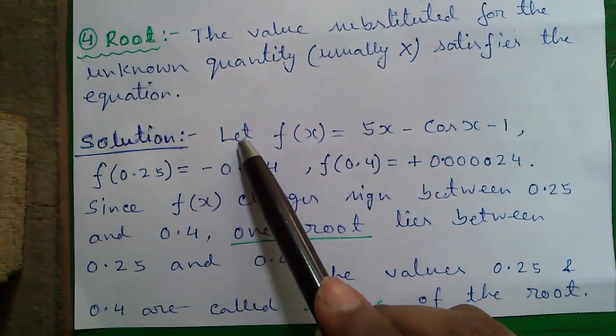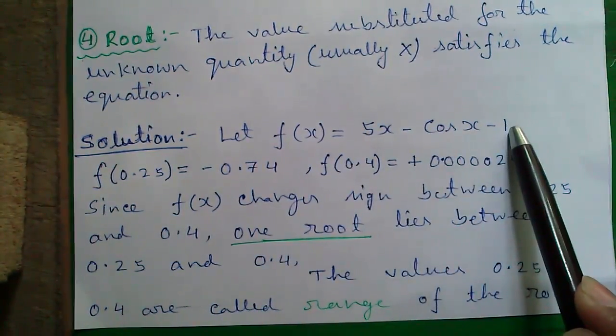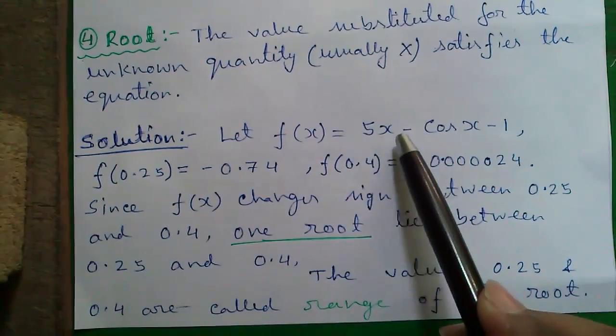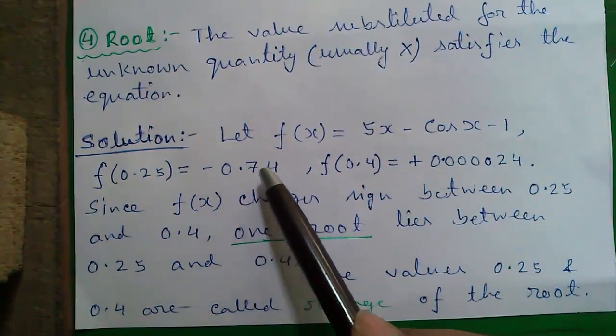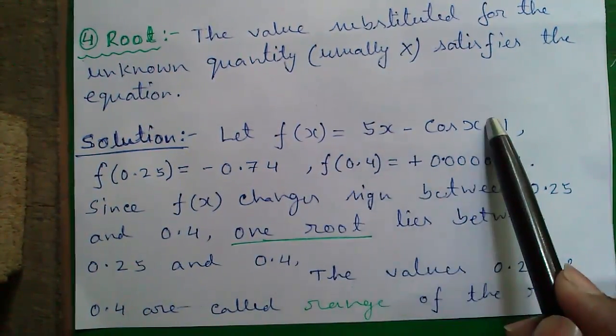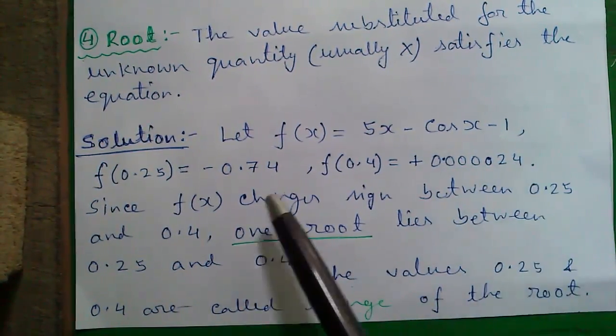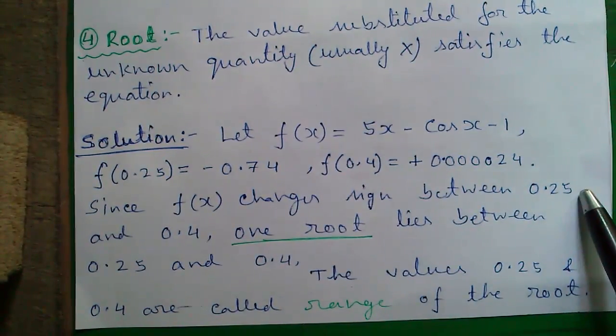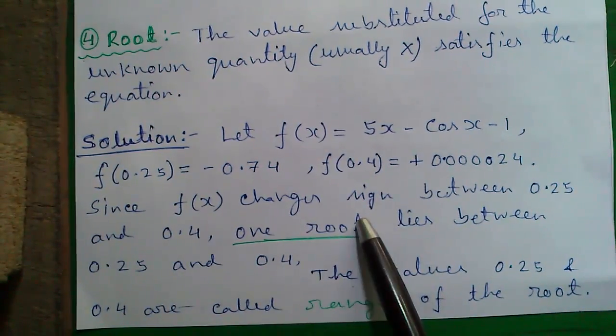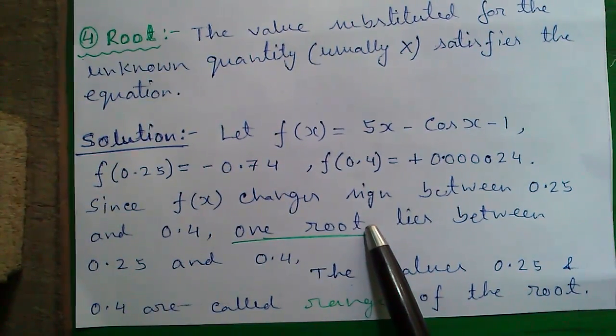So let's proceed to our solution. Let f of x equals to 5x minus cos x minus 1 given in the question. If we substitute 0.25 in place of x in this expression, you will get minus 0.74. And if we substitute 0.4 in place of x in this expression, you will get plus 0.000024. Since f of x changes sign between 0.25 and 0.4, one root lies between 0.25 and 0.4. There may be more than one root in some expressions which I will explain in my upcoming video.